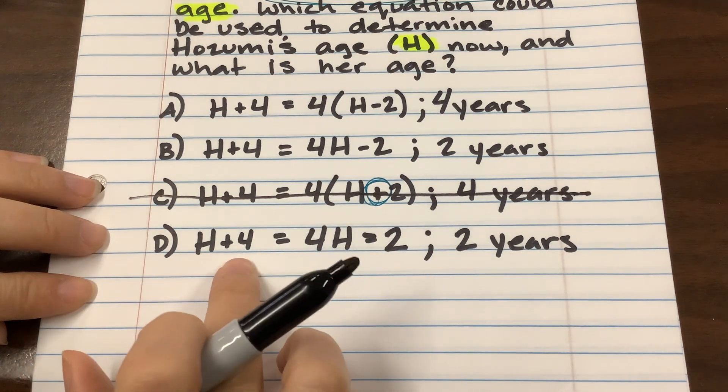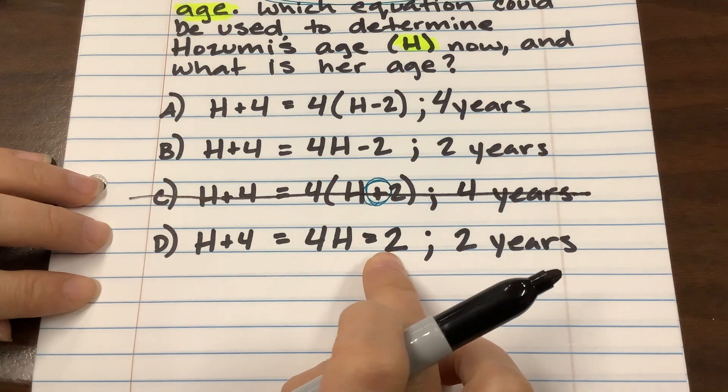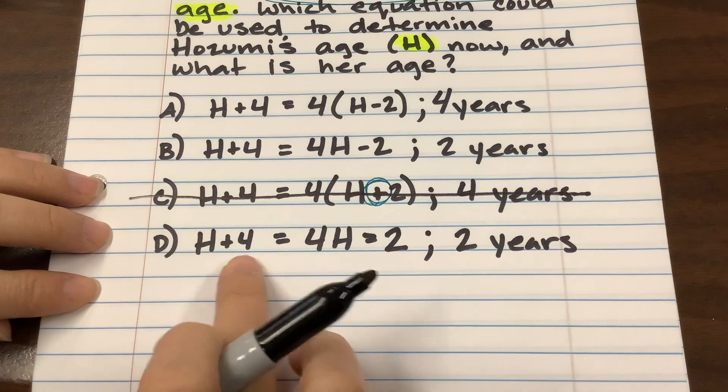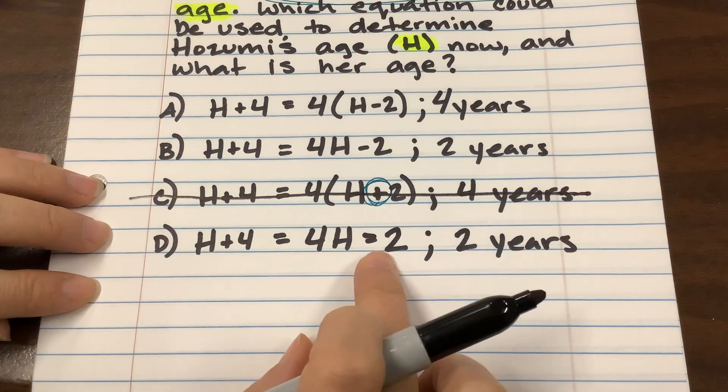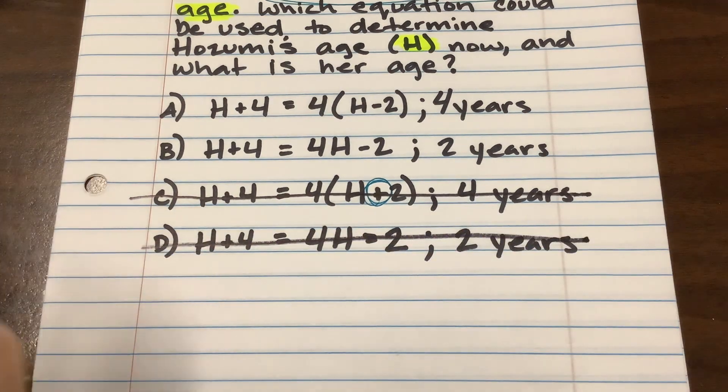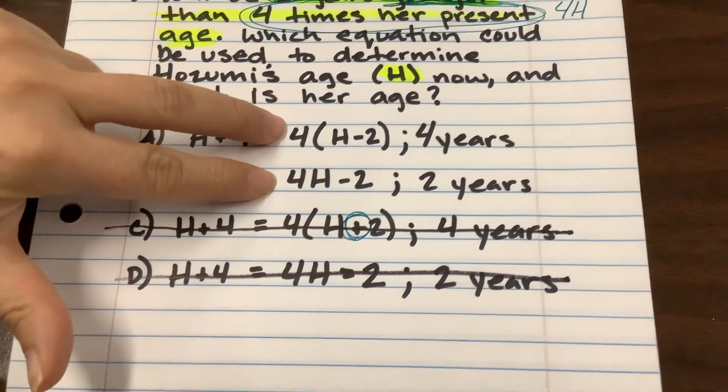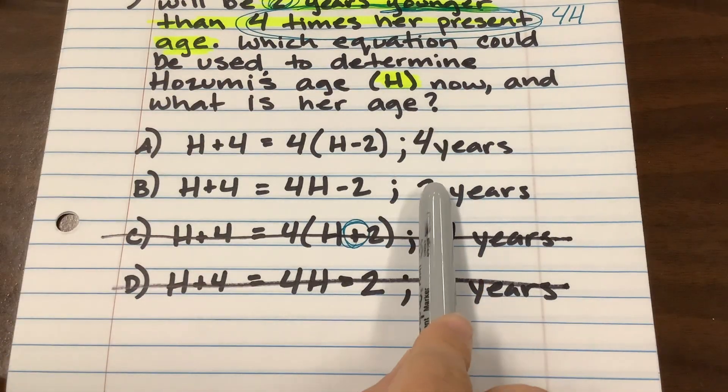So this says that her age plus four is four times her age, which is two, and that she's two years old. Well, two plus four is not the same as four times two, and they definitely don't equal two. So it can't be D either. So we're down to these two possible answers.